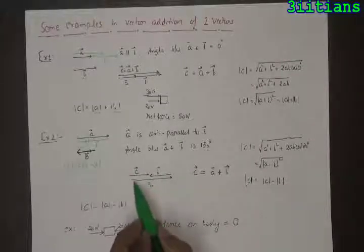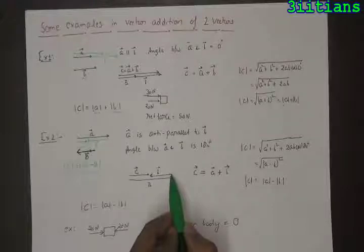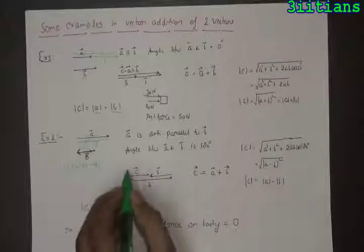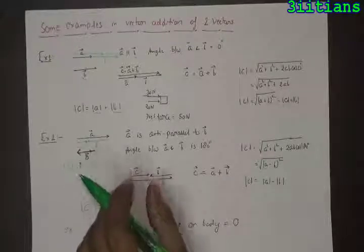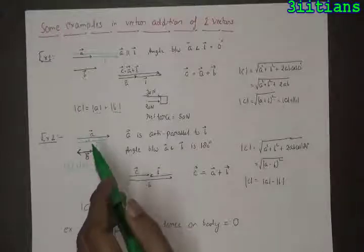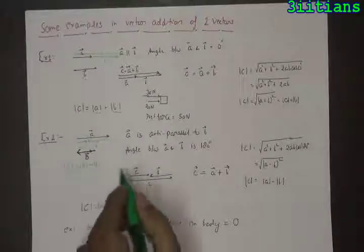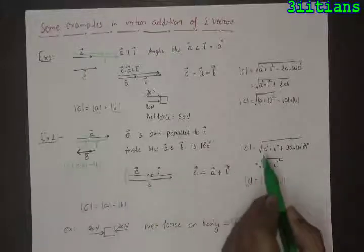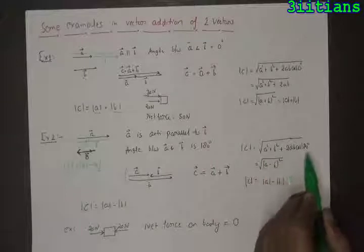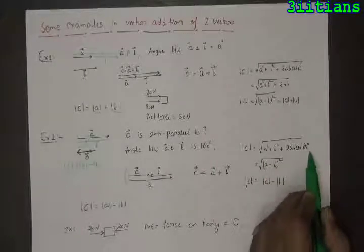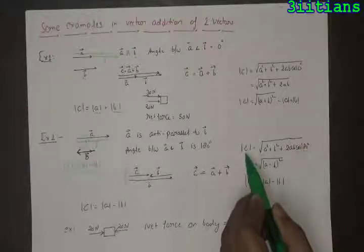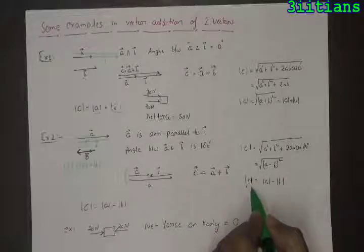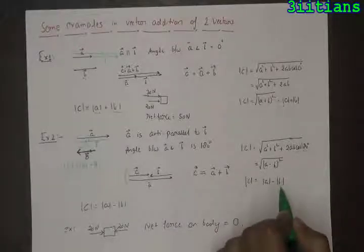I have taken the tail of one and placed it on the head of the other. The third side is represented by this line whose magnitude, when the angle between two vectors is 180 degrees, will be equal to the magnitude of a vector minus the magnitude of b vector. Using the formula and placing theta equal to 180 degrees, cos 180 equals minus 1, so the magnitude of c vector becomes equal to (a minus b) whole square under root, which equals the magnitude of a vector minus the magnitude of b vector.